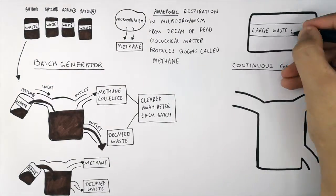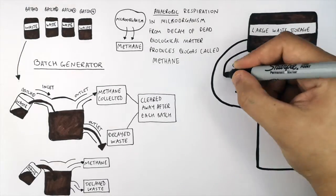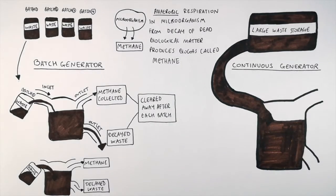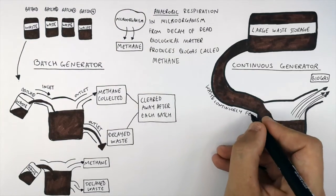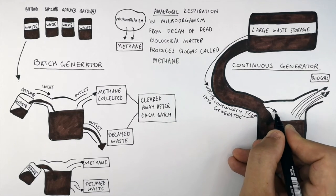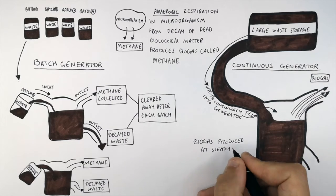This is a large waste storage unit for a lot of biological waste. The biological waste is continuously fed into the continuous generator. That means biogas is produced at a steady rate. So waste is continuously fed into the generator, which means biogas is produced at a steady rate.